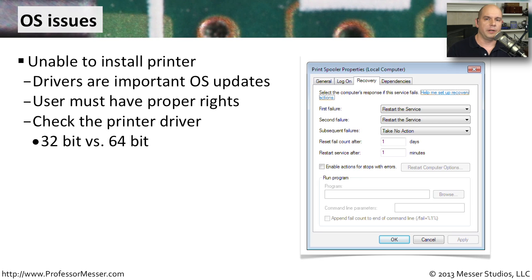If someone is trying to print to a printer for the very first time, Windows may need to install drivers for that printer, which may require rights the user might not have. Drivers are an important operating system component, and you want to ensure they're installed for the right reasons. You can configure certain printer drivers to be allowed while preventing others. Make sure you're using the correct printer driver for the right printer and the right operating system — whether you're using a 32-bit or 64-bit operating system, because those printer drivers are very different.